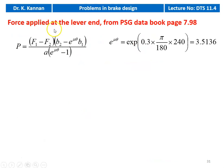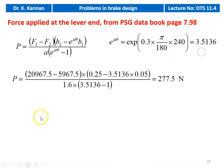Then we calculate the force applied at the end of the lever. From PSG data book page number 7.98, the equation is P equals (F1 minus F2) into (B2 minus e to the power mu theta into B1) divided by A into (e to the power mu theta minus 1). Calculating e to the power mu theta equals exponential of 0.3 into pi by 180 into 240 equals 3.5136. Substituting: P equals (20,967.5 minus 5,967.5) into (0.25 minus 3.5136 into 0.05) divided by 1.6 into (3.5136 minus 1) equal to 277.5 Newton.